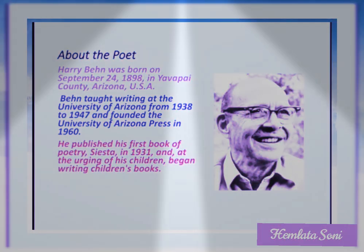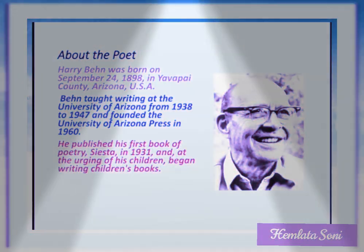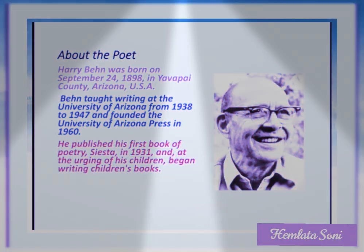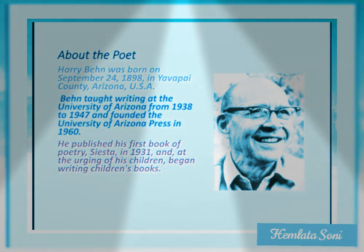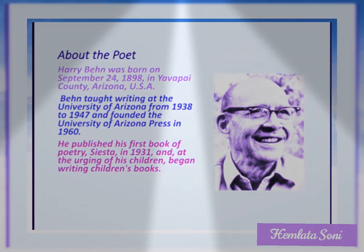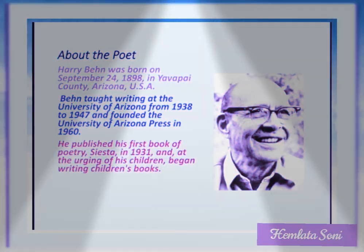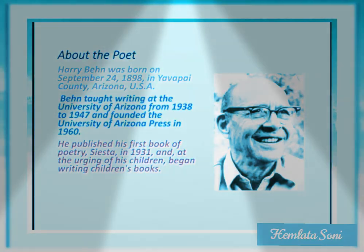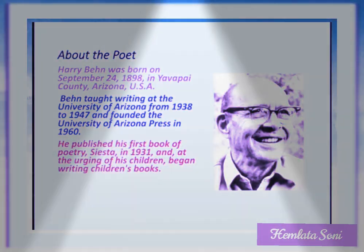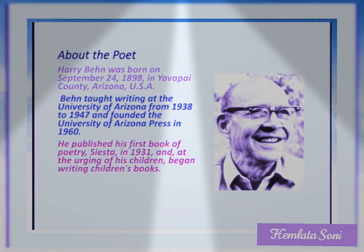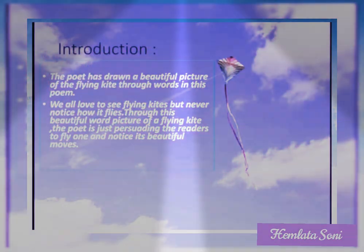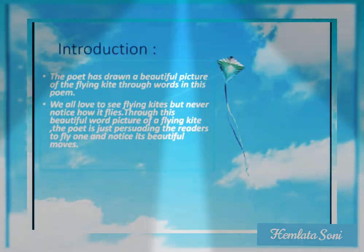Harry Behn was born on September 24, 1898, in Arizona, USA. He taught writing at the University of Arizona from 1938 to 1947 and founded the University of Arizona Press. In 1960 he published his first book of poetry, Sister, in 1931, and at the urging of his children began writing children's books.